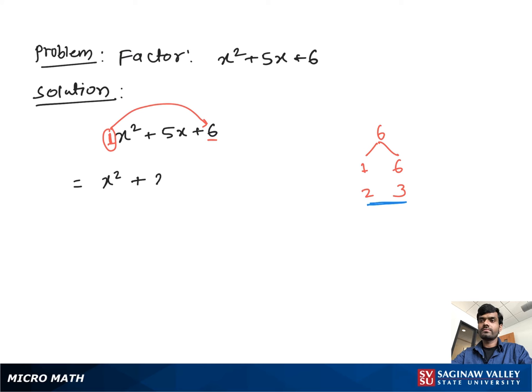We have 2 and 3. Then we write x squared plus 2x plus 3x plus 6. Then you take x common, and we can write x times parenthesis x plus 2.